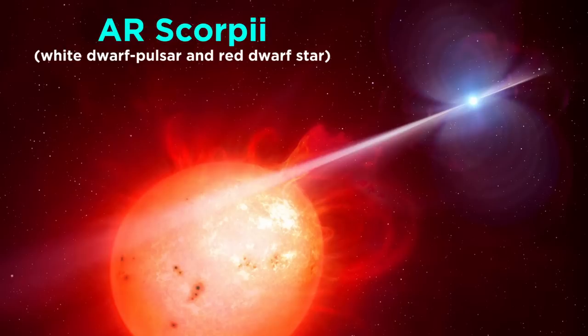One fascinating binary system is called AR Scorpii. This is a binary pulsar, which consists of a white dwarf pulsar about the size of Earth and a red dwarf star.